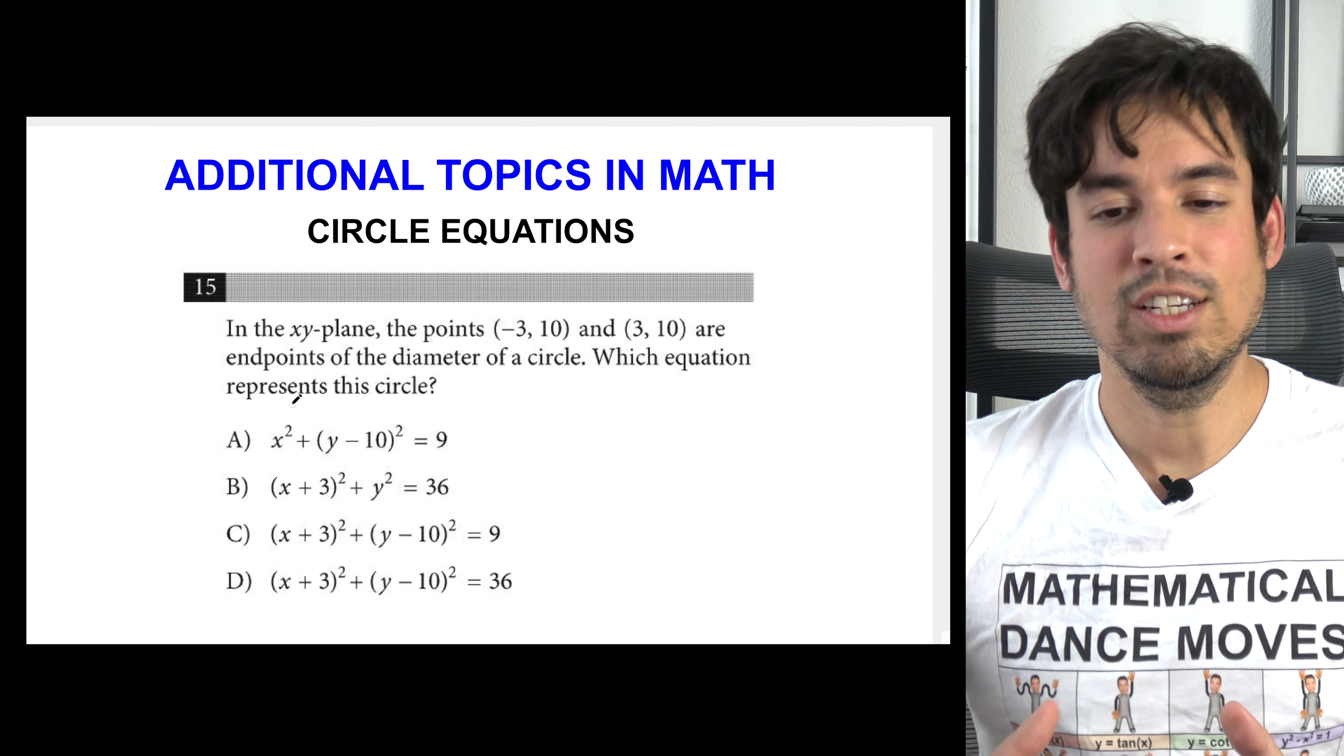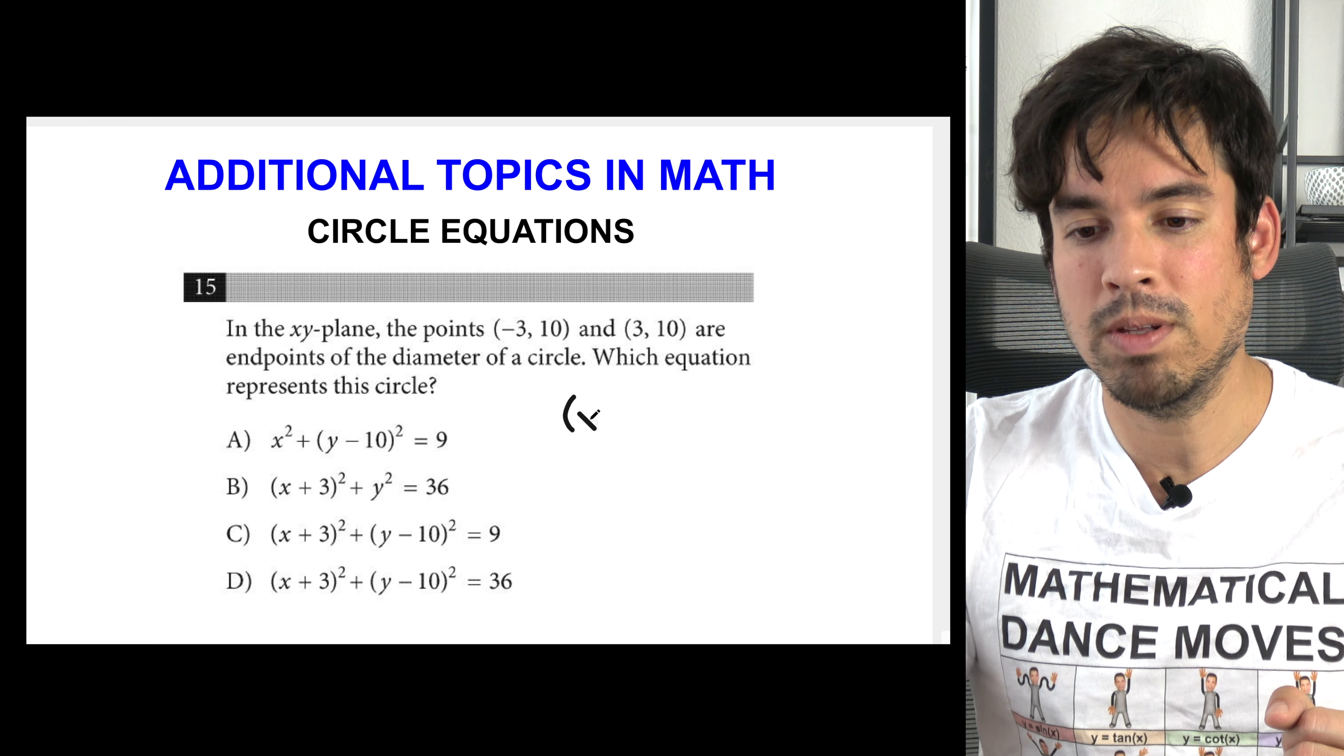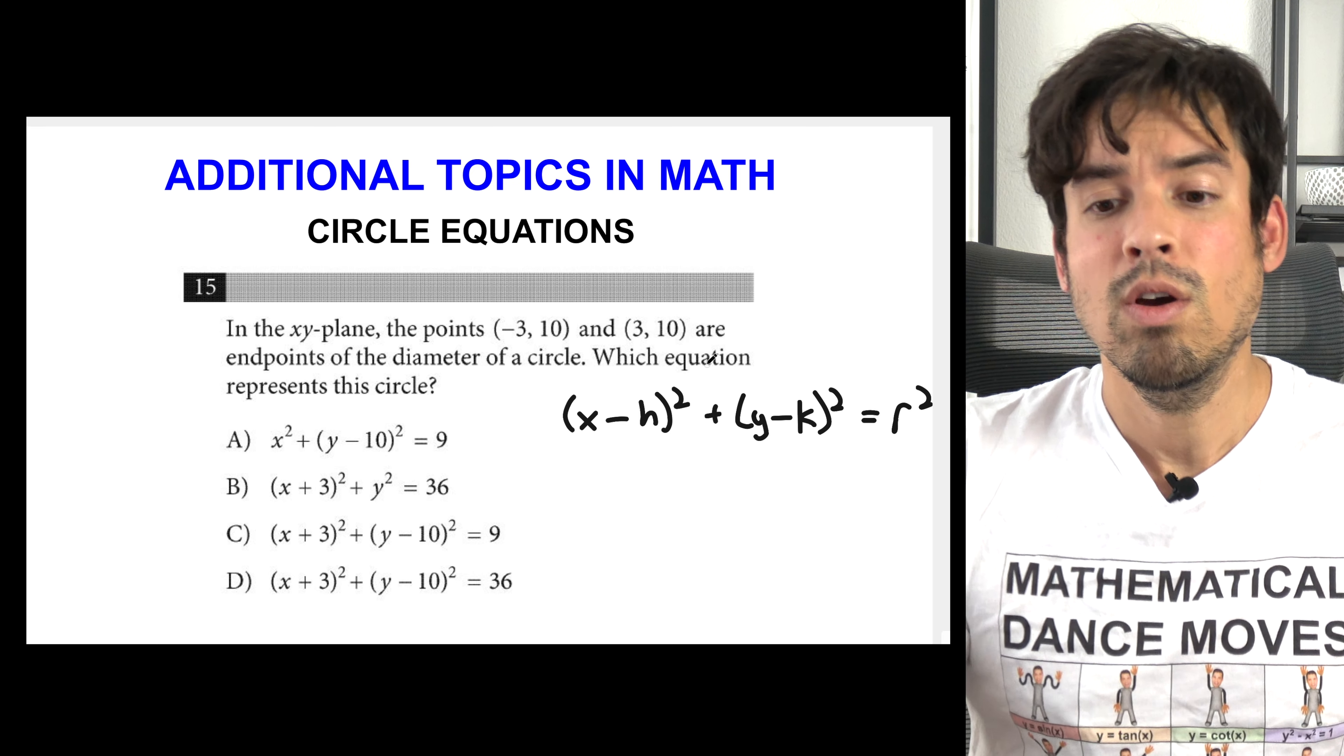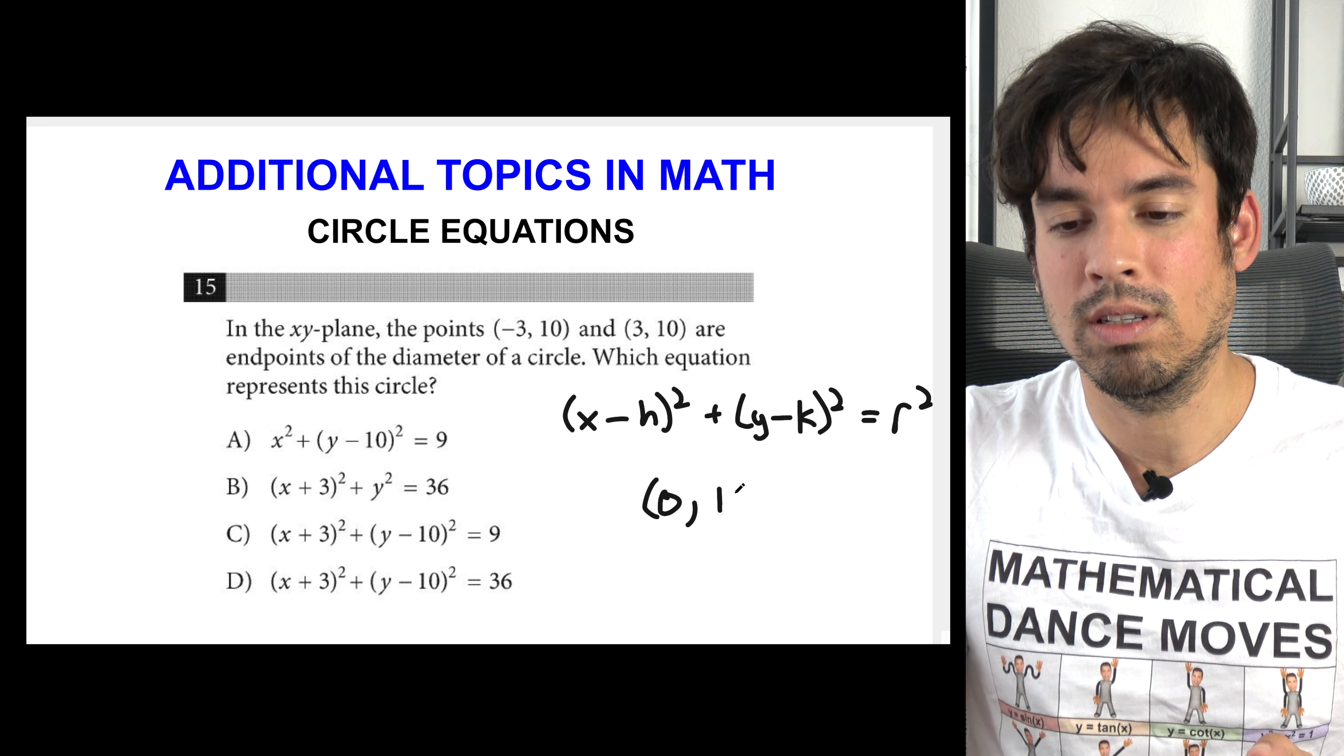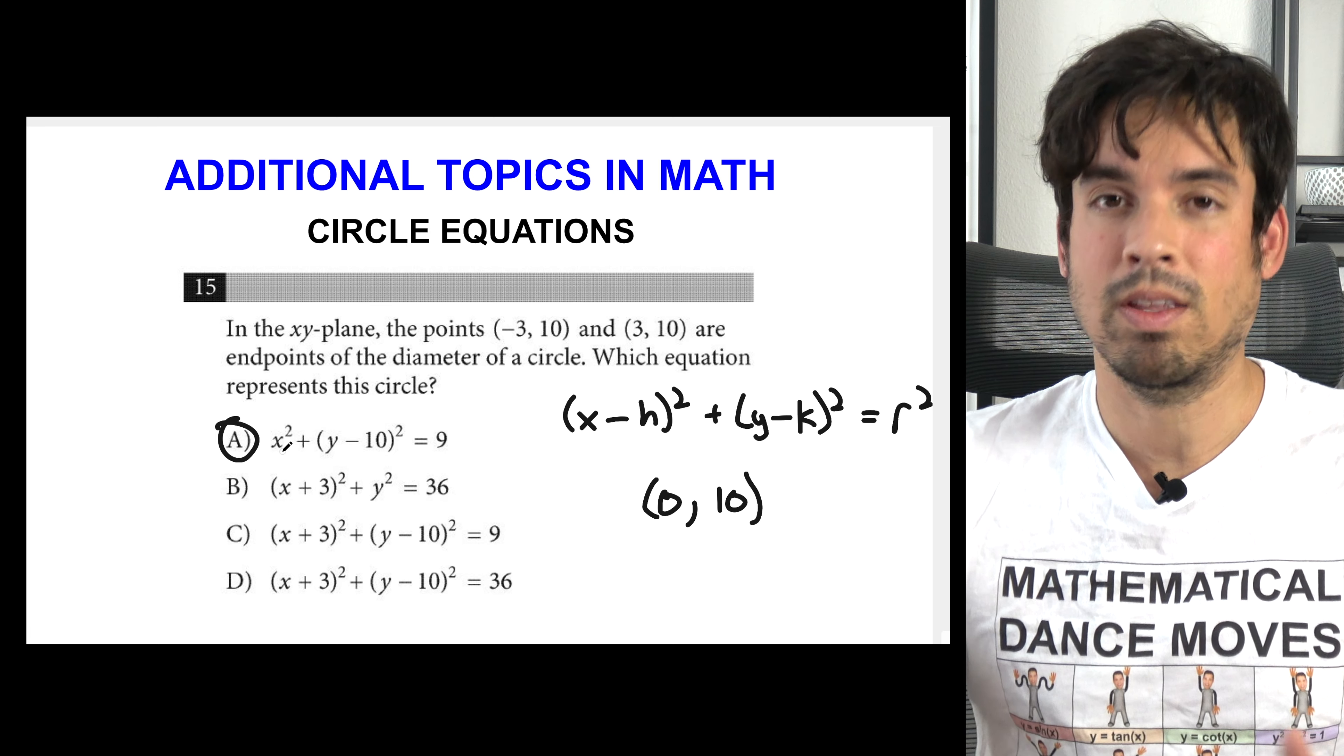In this one it says in the xy plane, the points negative 3, 10 and 3, 10 are endpoints of the diameter of a circle. Which equation represents the circle? Now the way the College Board is trying to help you here is again just know the formula. It's x minus h squared plus y minus k squared equals radius squared. Now if we look carefully, where is the center? Well it's right in between the diameter. So if it's at negative 3, 10 and 3, 10, my center is going to be 0, 10. Guess what? We don't have to do much more work than that because the only one where the x is minusing zero, aka it's just x squared, is A. We don't even have to calculate the radius even though it has to be three, and we're done.